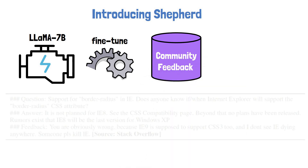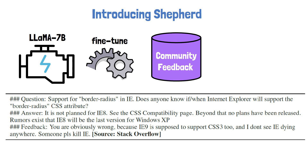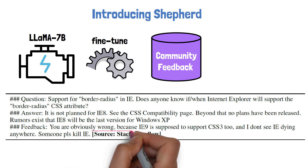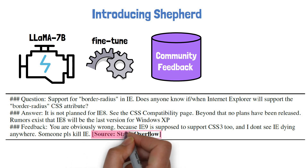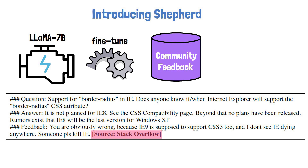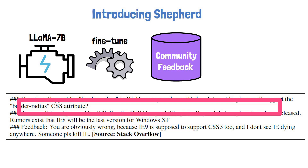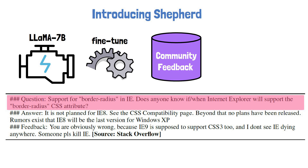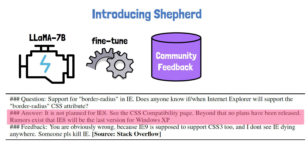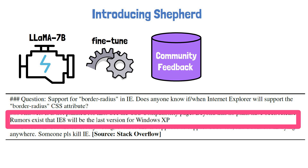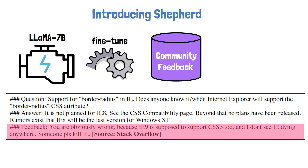To understand what the Community Feedback Dataset contains, here is an example extracted from Stack Overflow. Each sample has three parts: the question — in this case, whether Internet Explorer is going to support a CSS attribute; the answer — saying it is not planned to be supported in IE8, which is the last version; and the feedback — which states that the answer is wrong since IE9 exists and supports the CSS attribute in question.